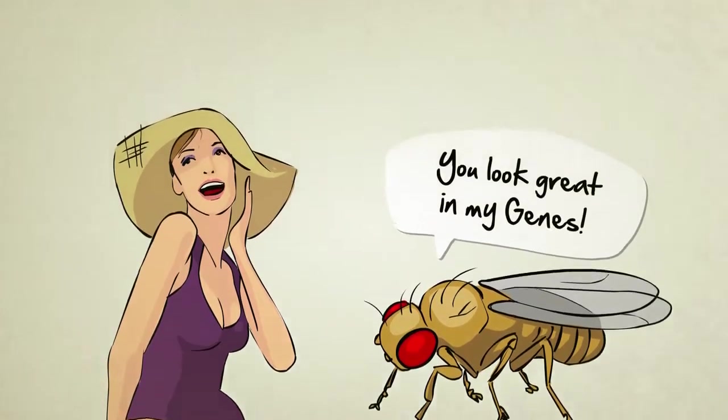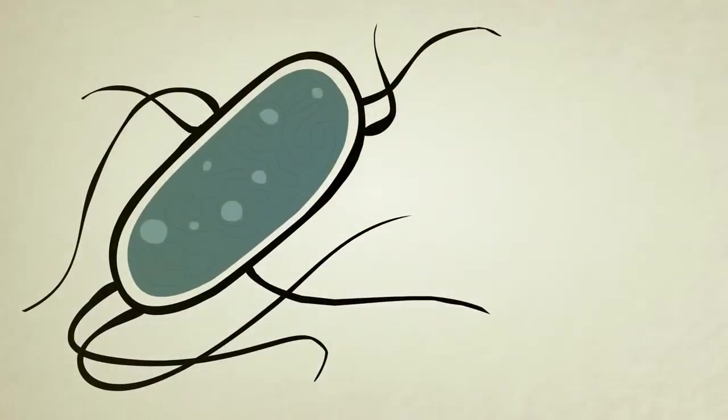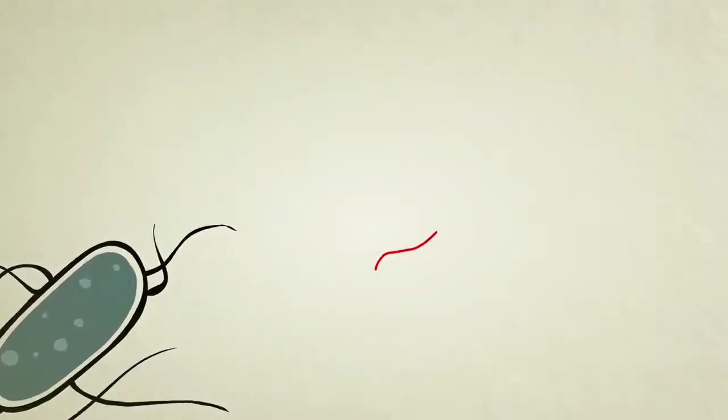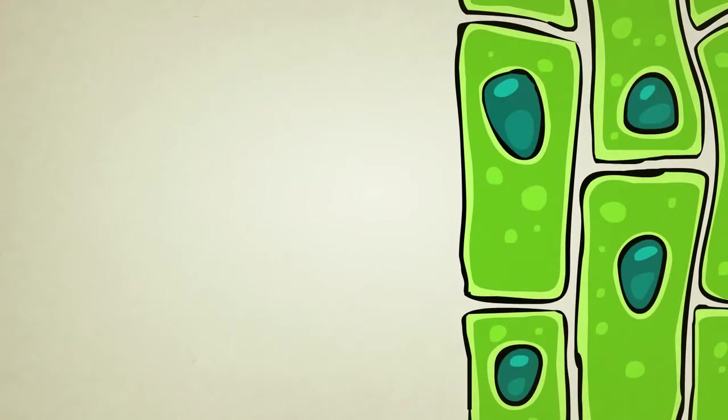Because all creatures use DNA in pretty much the same way, genetic engineers have found that if they take a gene from, say, a bacteria cell and insert it into the DNA of an animal or a plant cell, that animal or plant cell will then read the new gene and produce the bacterial protein.